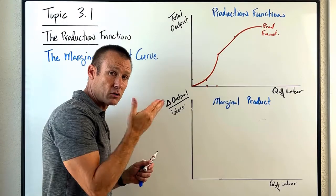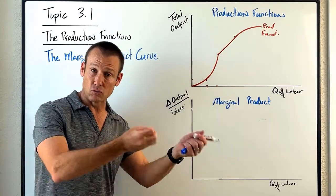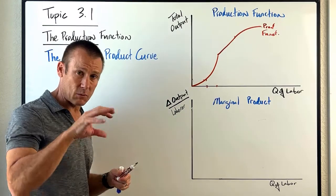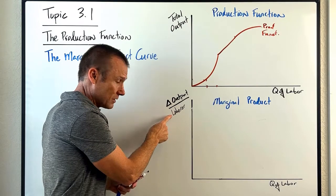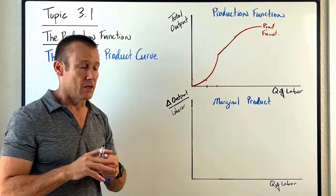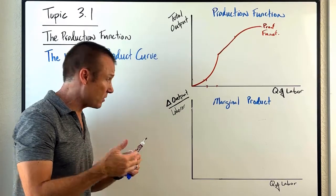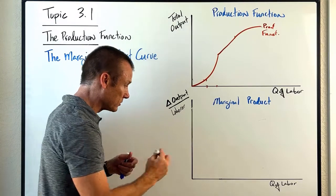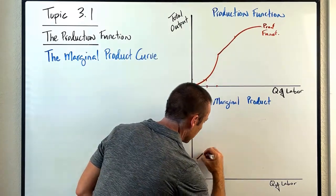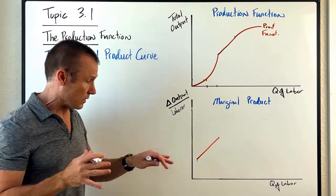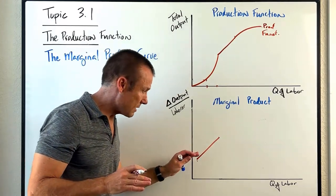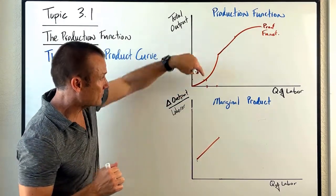Perhaps even more important is the marginal product curve. Marginal product is basically just graphing marginal returns and what we just talked about. On the vertical axis, some people might just label this marginal product, but I like to say what we're actually doing is we're looking at the change in output per laborer — very explicit. So drawing the marginal product curve: at first, what's happening to our change in output per laborer? It's increasing — increasing marginal returns — so that marginal product curve is going to go up. All I need is that curve going up to show our marginal product is going up. That's our increasing marginal returns.